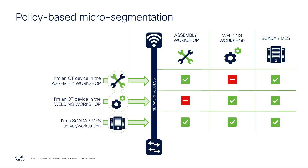When leveraged in an industrial environment, Security Group Tags give me the ability to define access for devices based on device information and where they're located inside the facility. For example, if I have an operational device inside the assembly workshop, I can simply create a policy that says any device identified as an OT device in the assembly workshop is allowed to talk to other assembly workshop devices, but may not be allowed to talk to welding workshop devices.